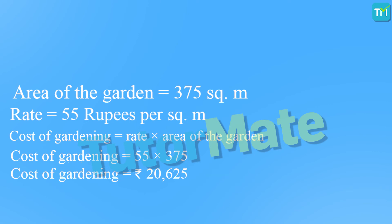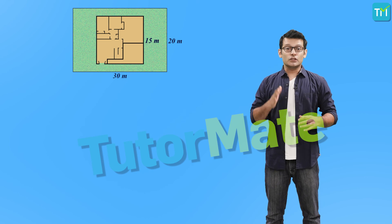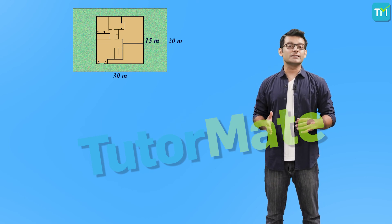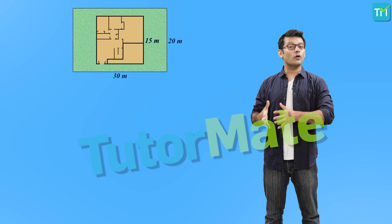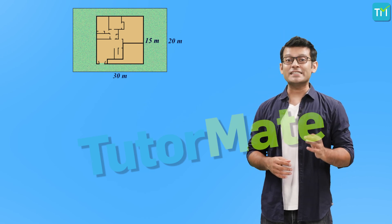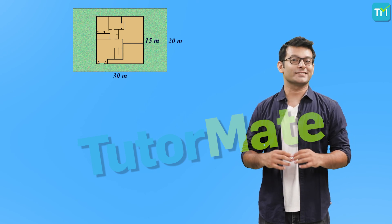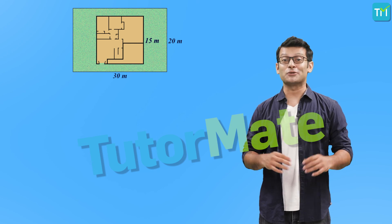Now we have the total area the garden will occupy. The rate of developing the garden is 55 rupees per square meter, so the total cost is rate times area of the garden: 55 times 375, which equals 20,625 rupees. Wasn't that simple?